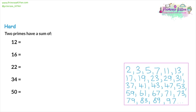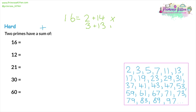For the hard questions, we'll look at the sum of two primes. Sum just means addition, so we're looking for two prime numbers that add up to the given number. The best way is to go through the list of prime numbers systematically. For 16: start with 2 — 16 is 2 plus 14, but 14 isn't prime. Try 3 — 16 is 3 plus 13, and 13 is a prime number. So 16 is the sum of 3 and 13.